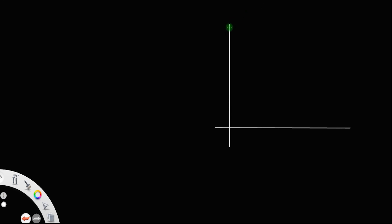Now, let us derive the third kinematic equation of motion. For that, let us consider the velocity-time graph. The velocity-time graph basically means we take velocity on the y-axis and time along the x-axis.